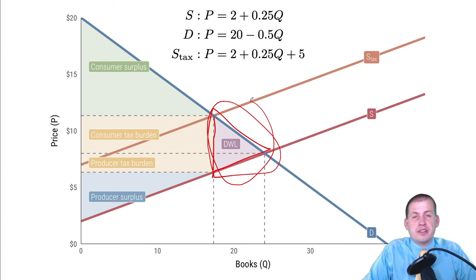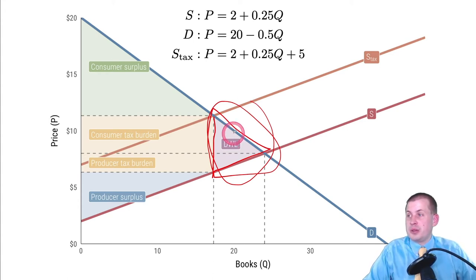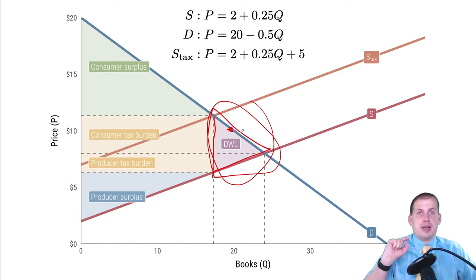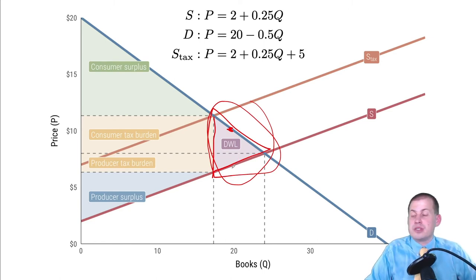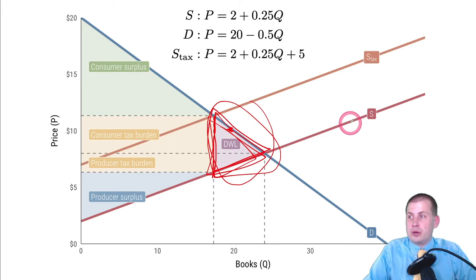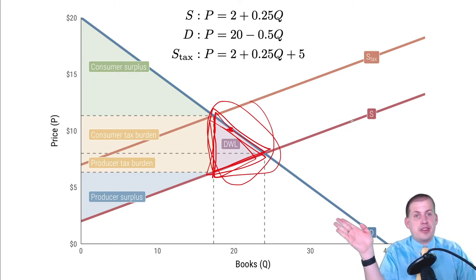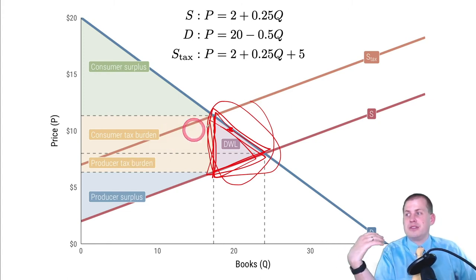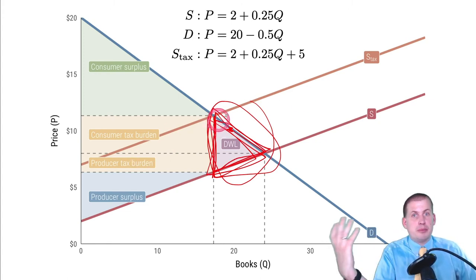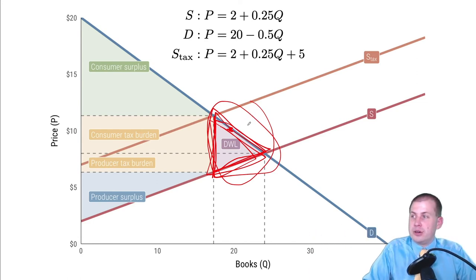The last part of the graph is a triangle called the deadweight loss — the part of the economy that nobody gets. The government doesn't get that value, producers don't get it, and consumers don't get it. These are the people who were willing to spend ten dollars for a book but can't anymore, so they're not buying books, not paying taxes on them, and sellers aren't selling to them. You can calculate the deadweight loss using one-half base times height geometry.